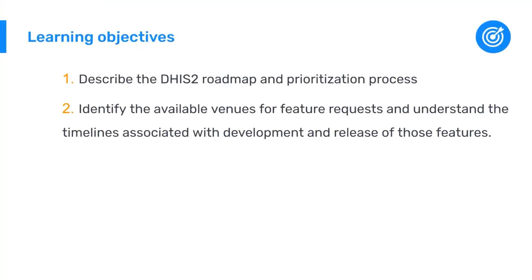This session will cover the DHIS2 roadmap and prioritization process. The learning objectives are to describe that process, identify the available venues for feature requests, and understand the timelines associated with development and release of those features.